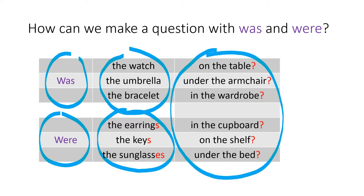So one question I could ask for example is was the umbrella in the wardrobe or were the sunglasses in the cupboard, right? Remember that if you see the s or es at the end of the object, then you know it's plural and so we have to use were, right?